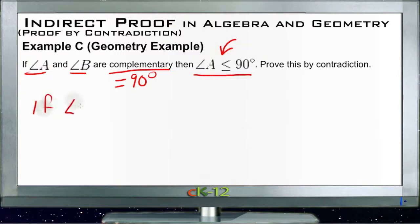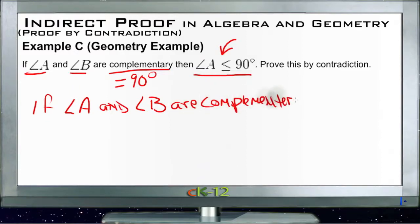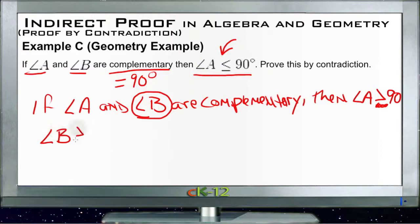And our new statement becomes if angle A and angle B are complementary, then angle A is greater than 90 degrees. It's just greater than 90 because obviously if it's going to be the opposite, it cannot be equal to either. So we're saying then that in order for them to be complementary, A must be greater than 90. Well, since angle B can't be negative, angle B must be greater than or equal to 0 by definition. You can't have an angle that's inside out, right?